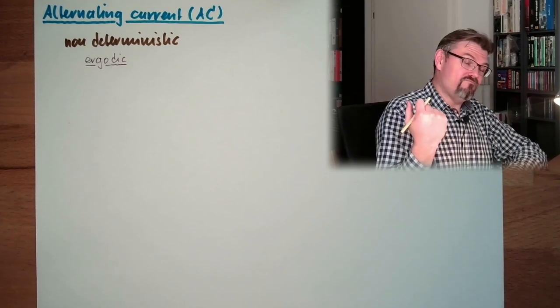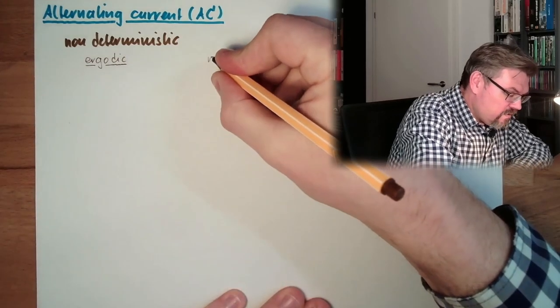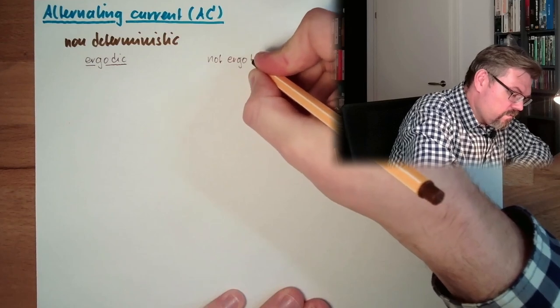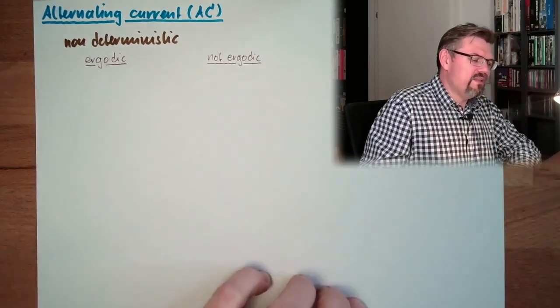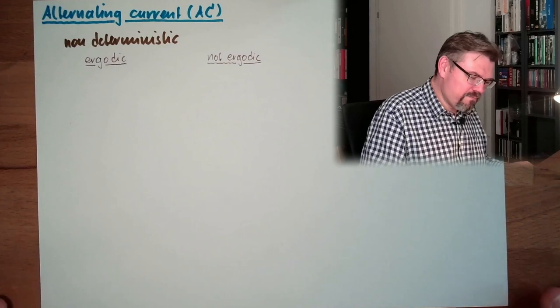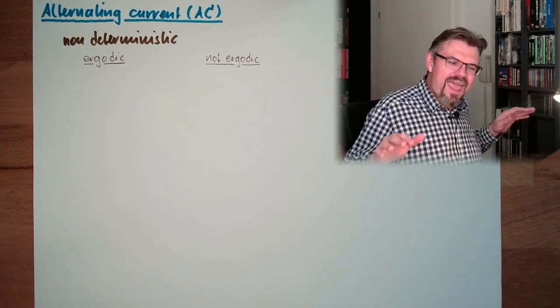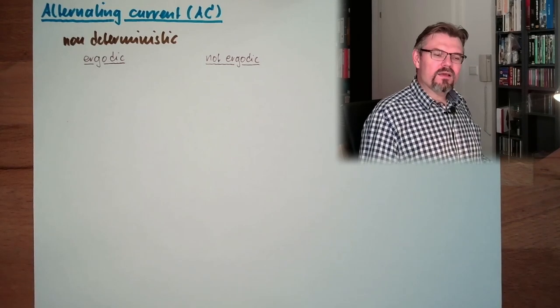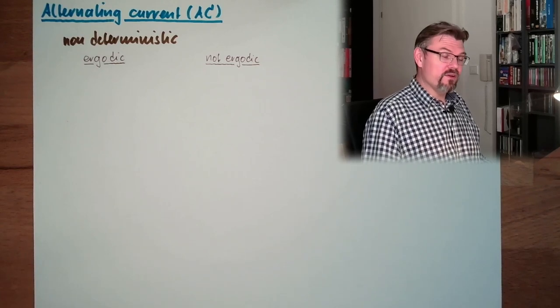And then the real signals which are not ergotic. These are the ones where I cannot even tell what they are likely to do. I cannot tell anything about them. This is not describable at all. Lucky for us, we don't have to deal with this, because this is not what we understand of alternating current.